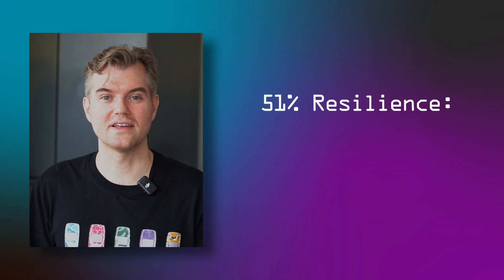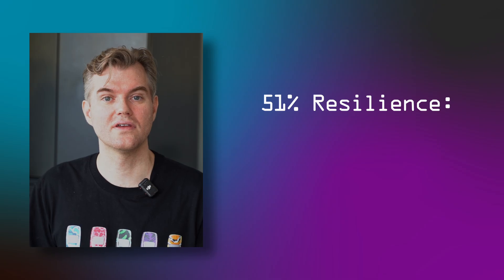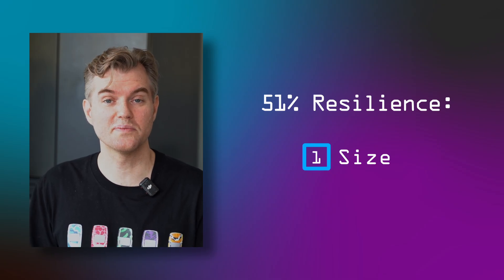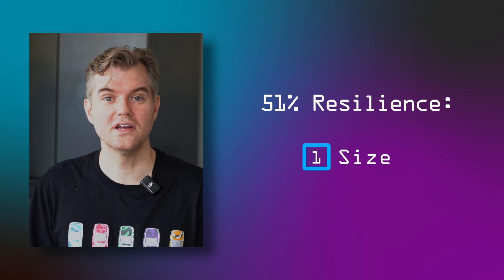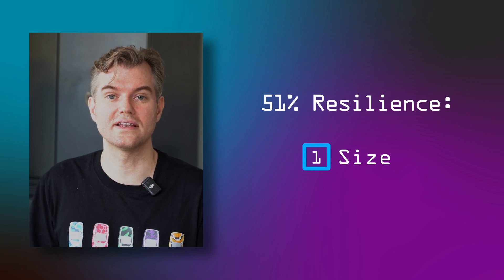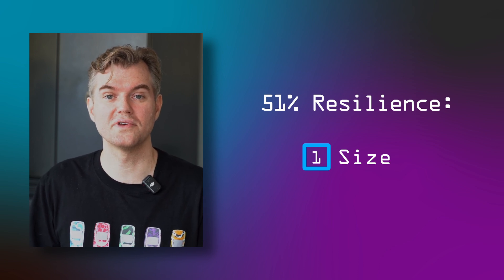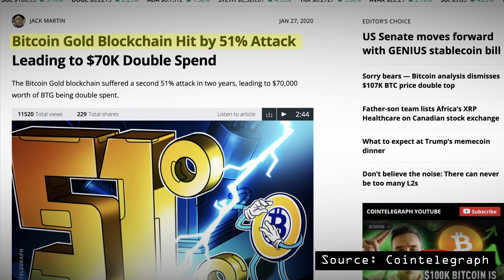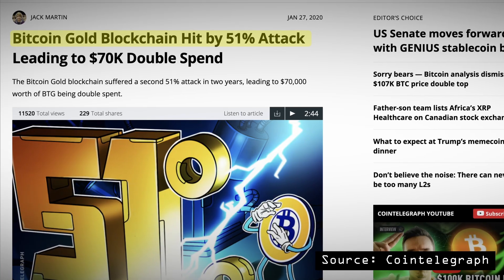How do we mitigate 51% attacks? Three ways come to mind. One is size — size matters here. The larger your crypto ecosystem is, the less likely that somebody gets 51% of the computational power at any point in time. Bitcoin is a good example. But then there are Bitcoin derivatives like Bitcoin Gold, which was hacked through a 51% attack years ago. And there are others like Litecoin that use the same algorithms but are significantly smaller in terms of number of participants.